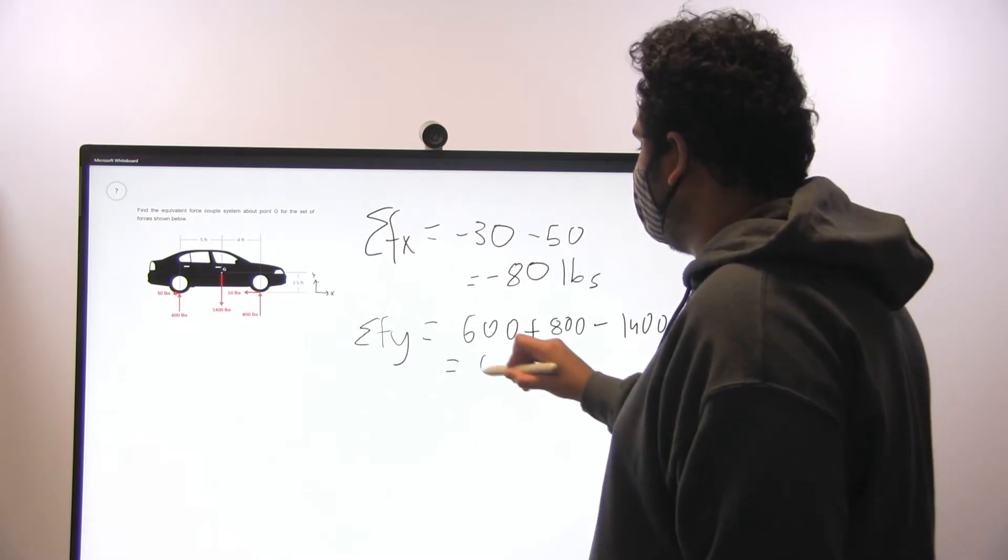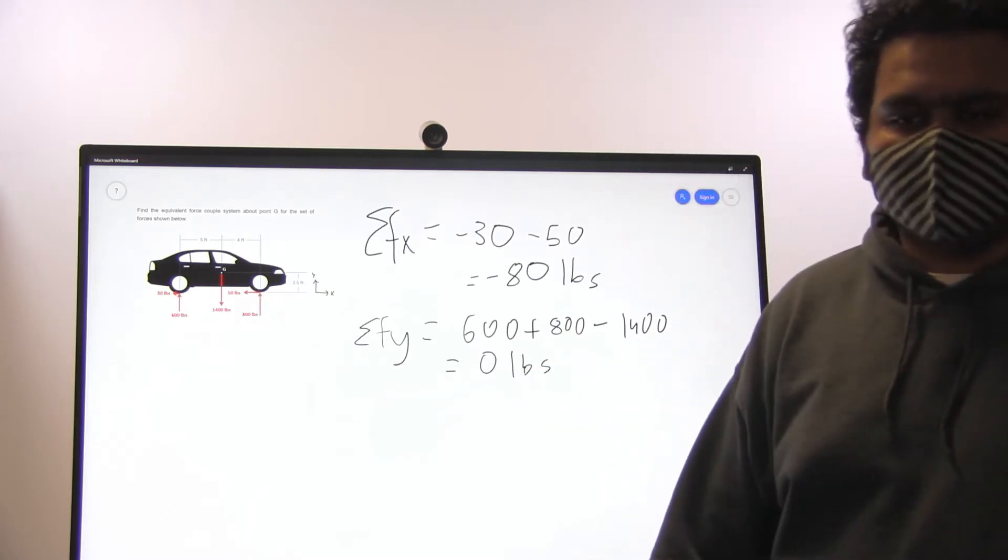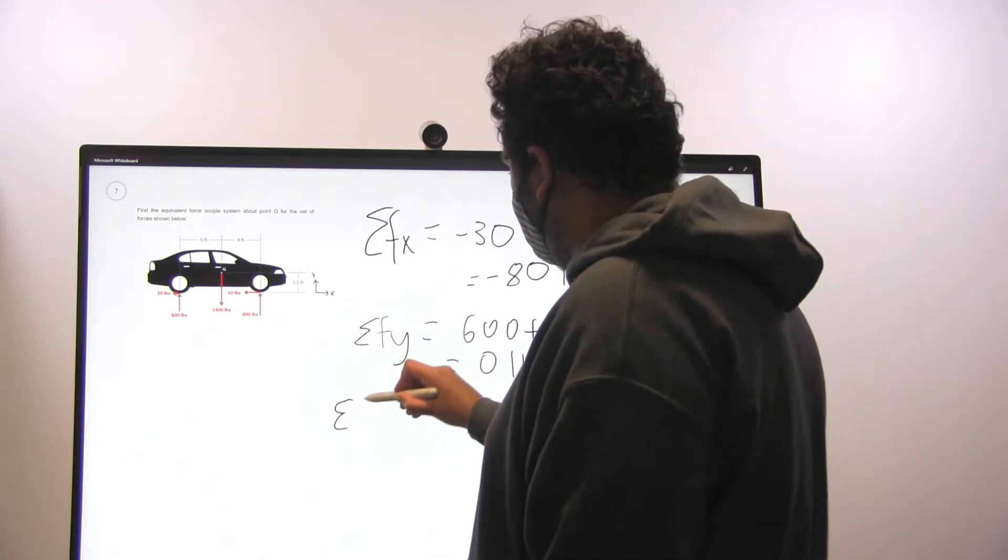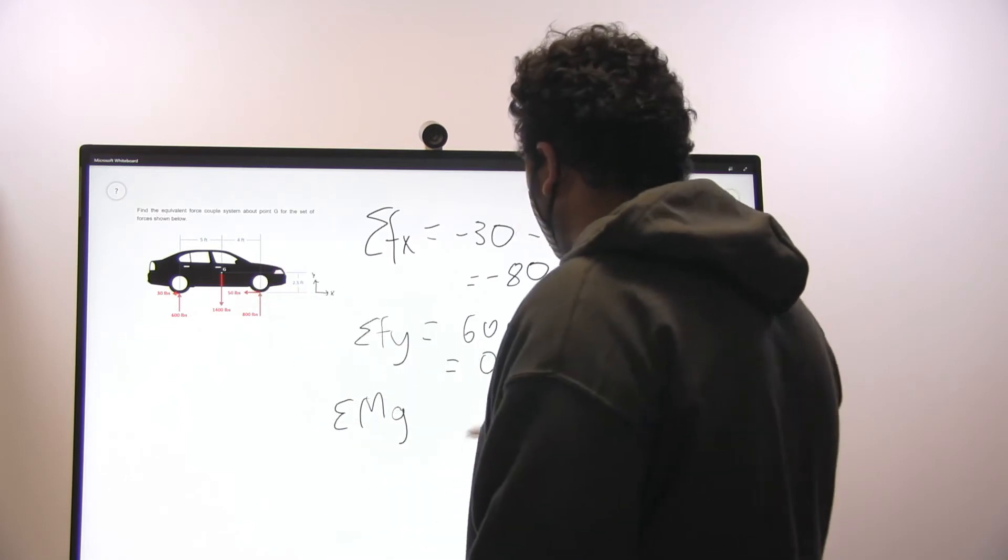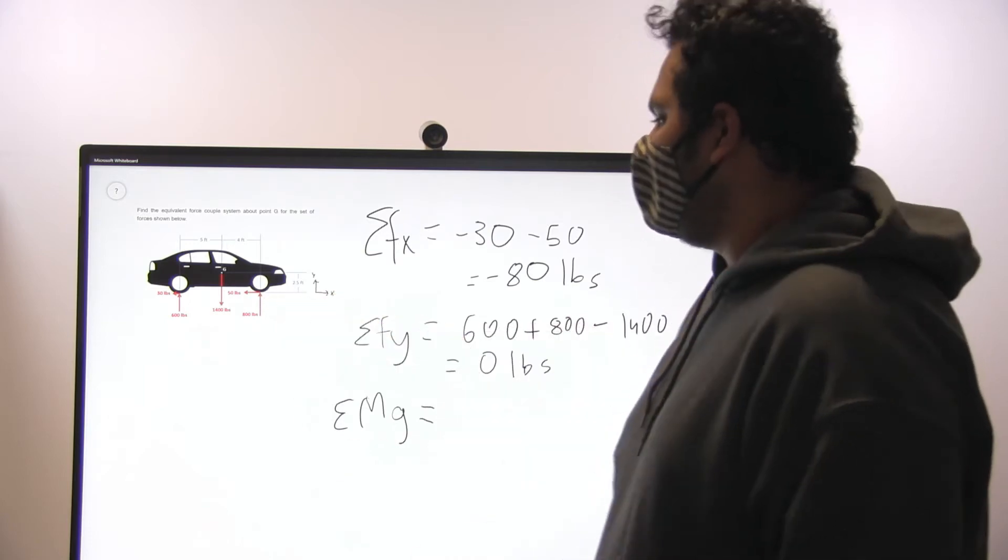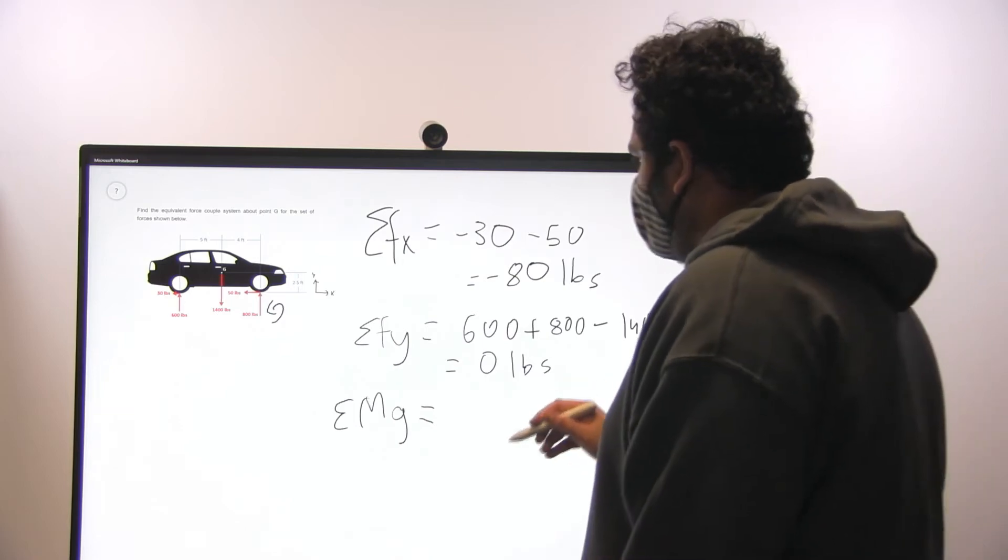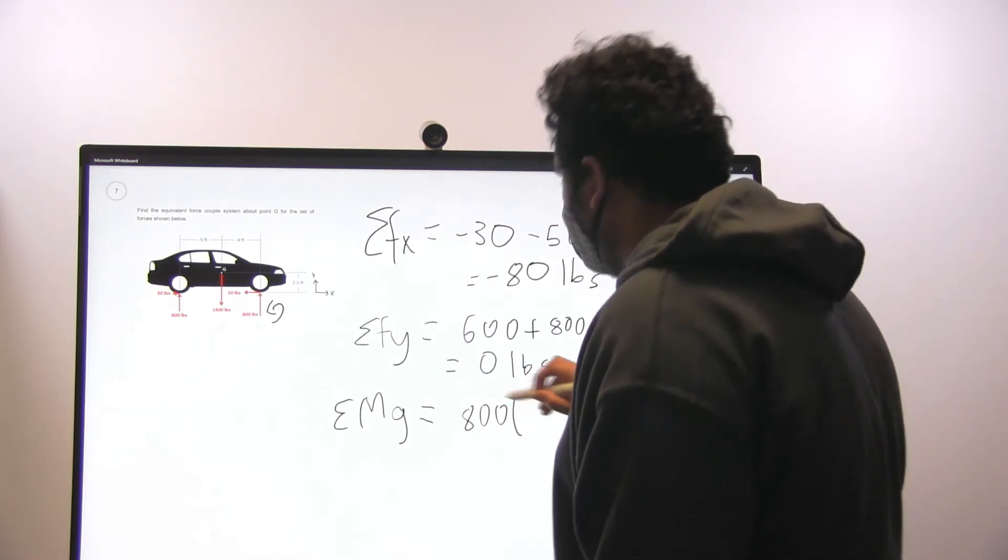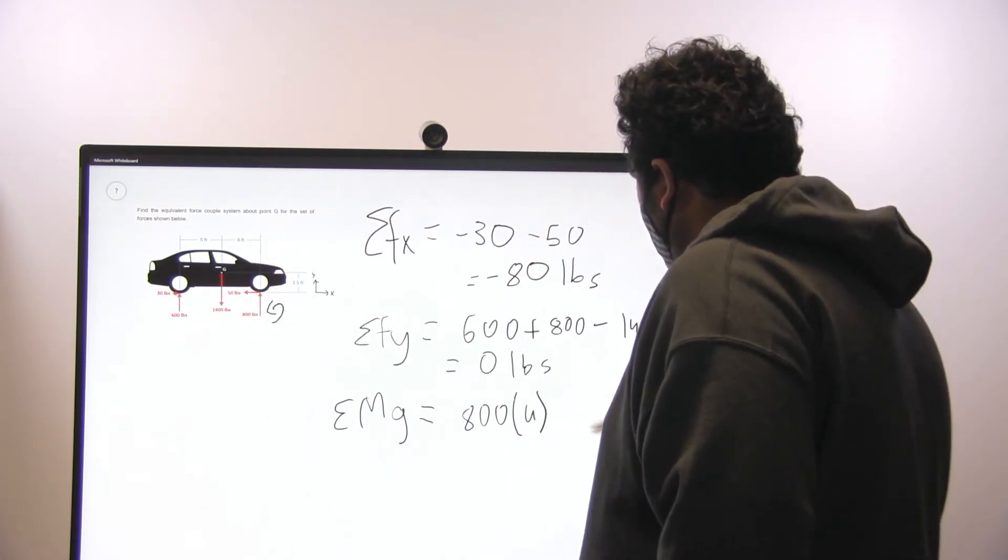Lastly, we can do the sum of moments on this car. Sum of moments about point G, which is the center of mass. So first we can take this 800 pounds, and it's in counterclockwise direction, so it's going to be 800 times the length, which is 4 feet.